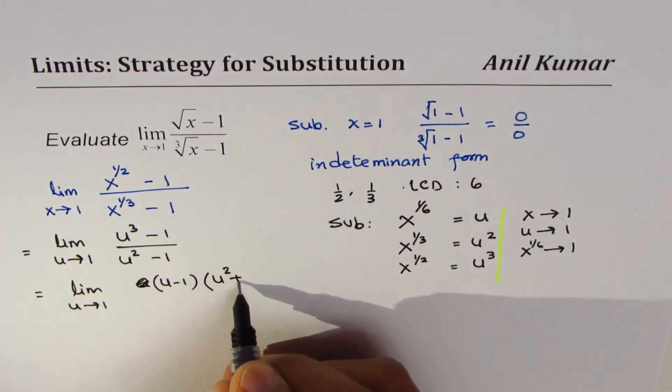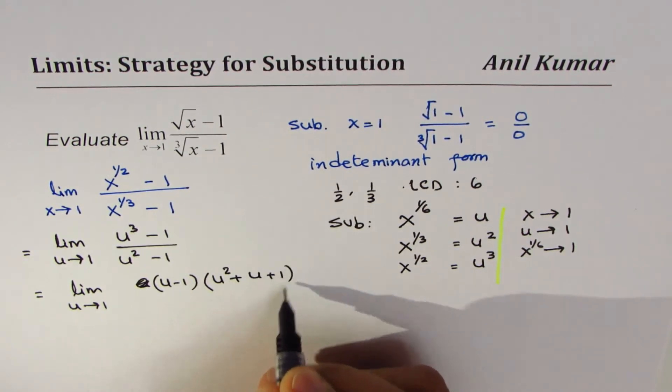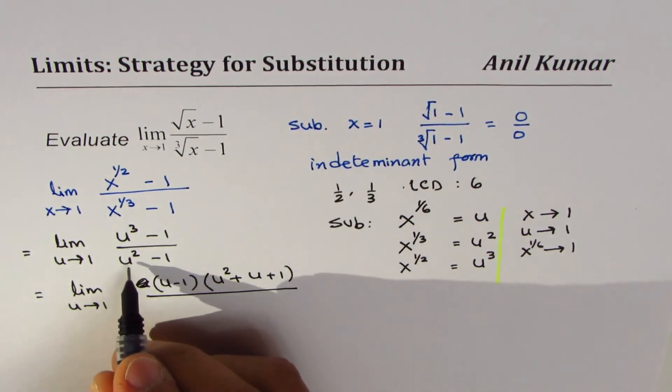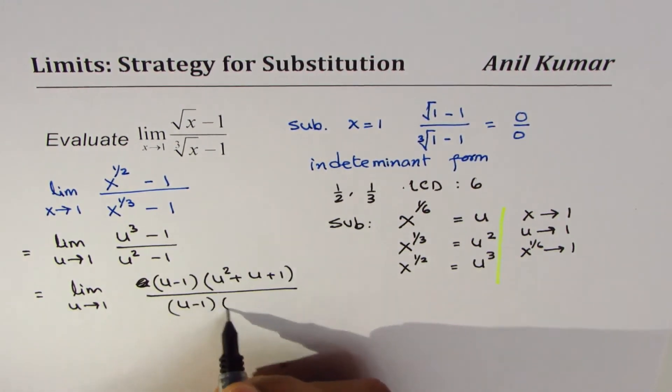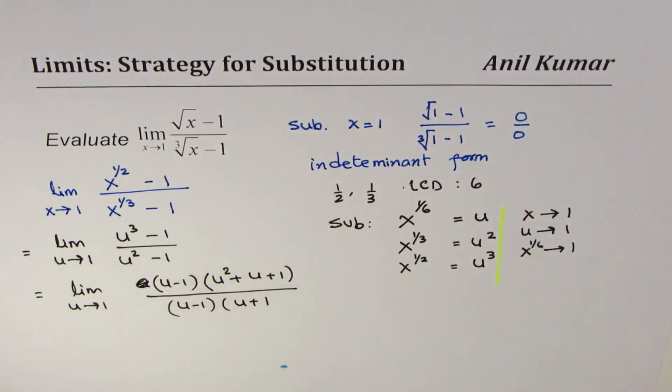Divided by, here we'll use difference of square formula which is u minus 1 times u plus 1. As you can see, the common factors u minus 1 cancel out.